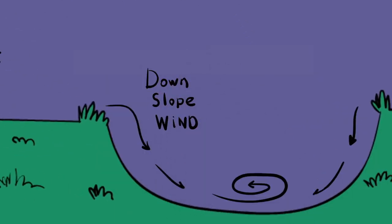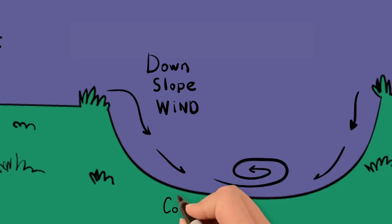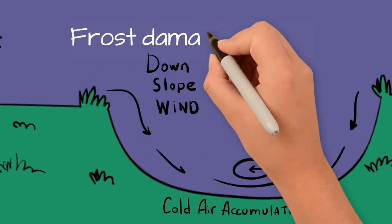This cold air settles in low elevation areas that do not allow for adequate drainage. As the cold air accumulates in an area, frost damage occurs.